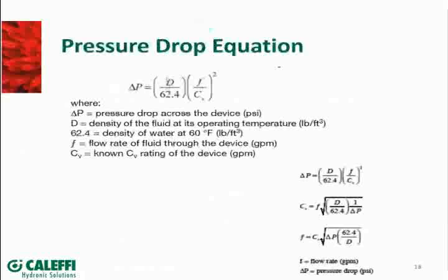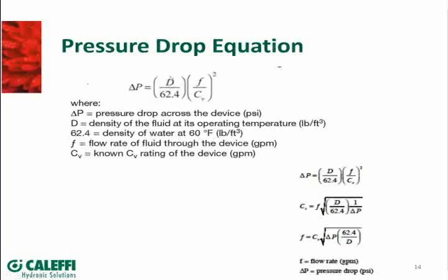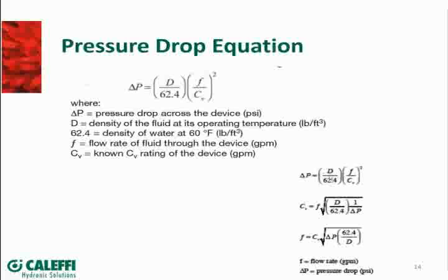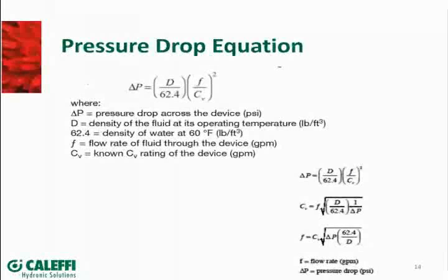Now this formula — we've pulled in another equation where we want to account for temperature. In the definition of CV, we're looking at water at 60 degrees Fahrenheit. But hydronic systems operate at higher temperatures — 140, 160, 180 degrees. There is a correction you can make for the temperature of the water. You can also use this formula to solve for different parts of the equation. If you're looking for delta P, we bring in the correction for specific gravity and can change the density of the water at different temperatures to correct for that.